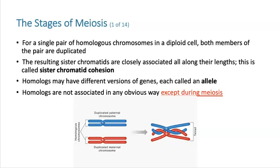Homologous chromosomes aren't associated with each other at any other time — they're just happy, flitting around, doing their own thing in the nucleus, not anywhere near each other, except during meiosis. During meiosis, we do have homologous chromosomes come together in something called a tetrad. So we're going to have this event where homologous chromosomes are, for a very brief period of time, associated with each other.